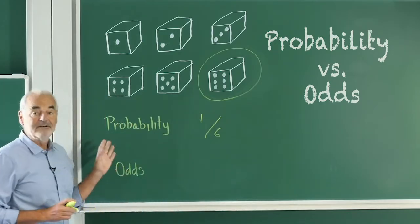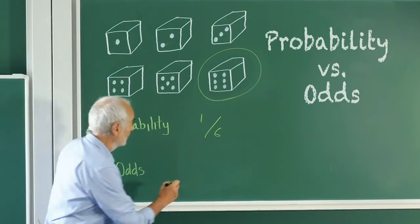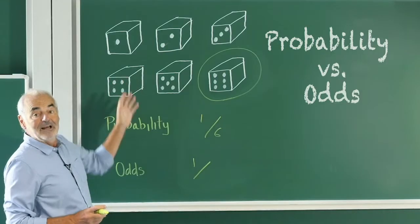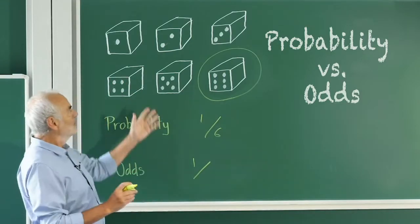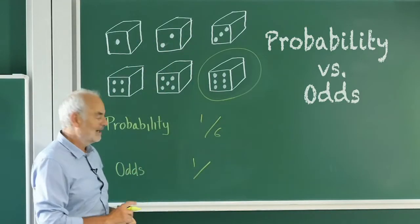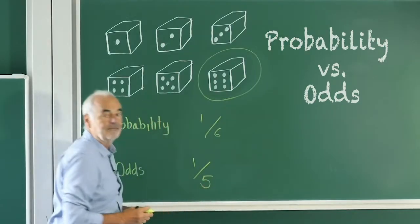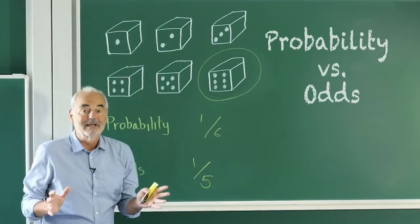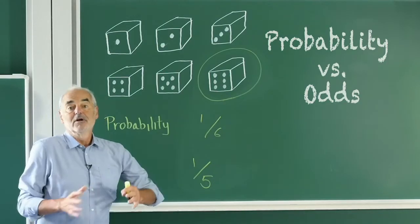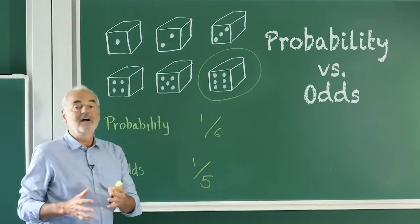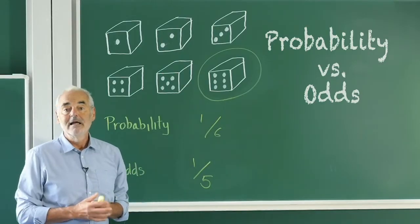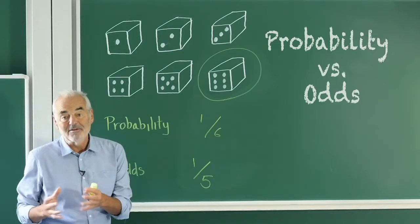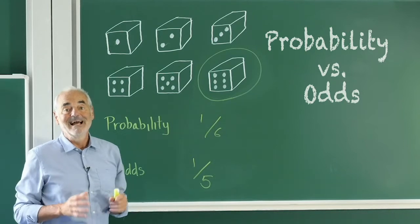What's the probability of this happening? It's the number of ways in which a six can come up — which is one — divided by the total number of equally likely possible outcomes, which is six. So that's a sixth, or around 17 percent. The odds are different. It's the number of ways in which a six can come up, which is one, divided by the number of ways in which a six might not come up — the five other outcomes. So that's one over five, or 0.2, or twenty percent. If you're a gambler you might say the odds were one to five on, or five to one against a six coming up.